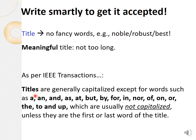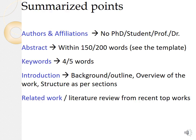In double-blind submissions no author information is included, but if you are allowed to put author names and affiliations, do not add titles like PhD student, graduate student, professor, or doctor next to the name — no need. The abstract should be within 150 to 200 words; it may vary, so look at the template of the journal or conference for the exact limit.